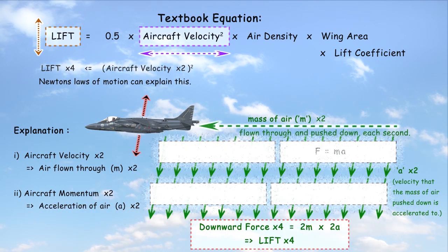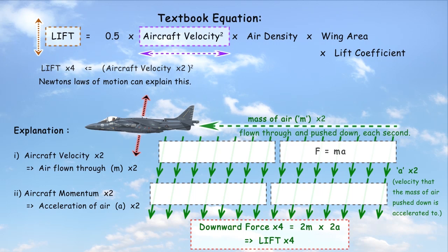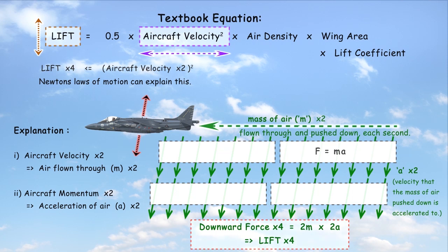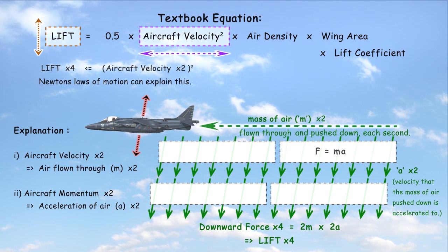In total, four times the downward force, and therefore four times the lift will be generated. No other theory of flight provides a satisfactory explanation for this.